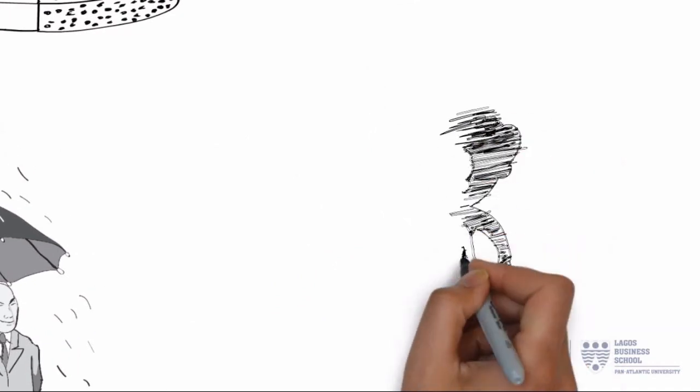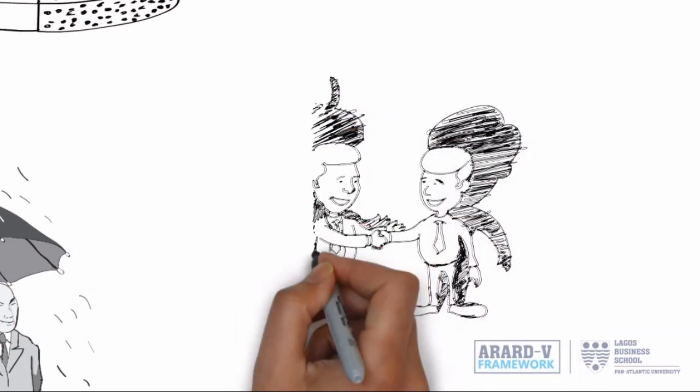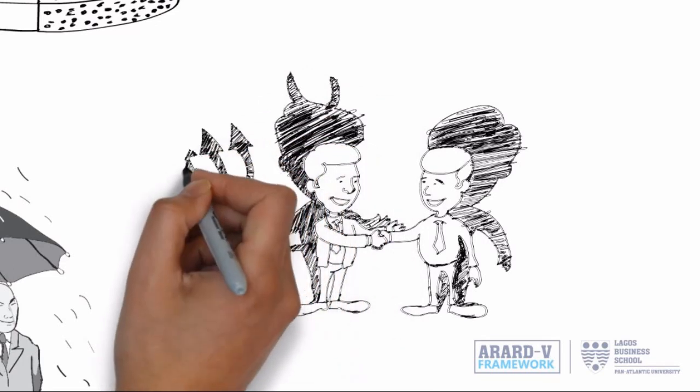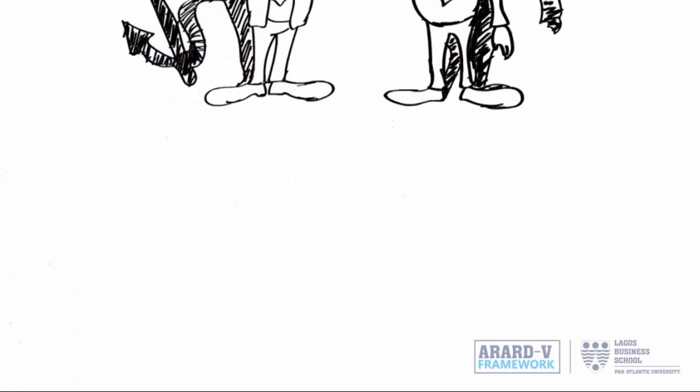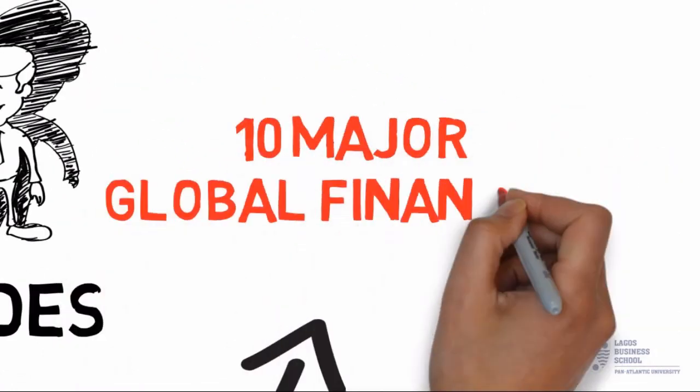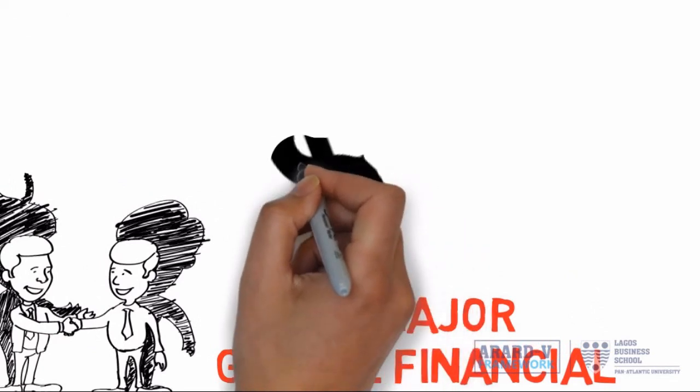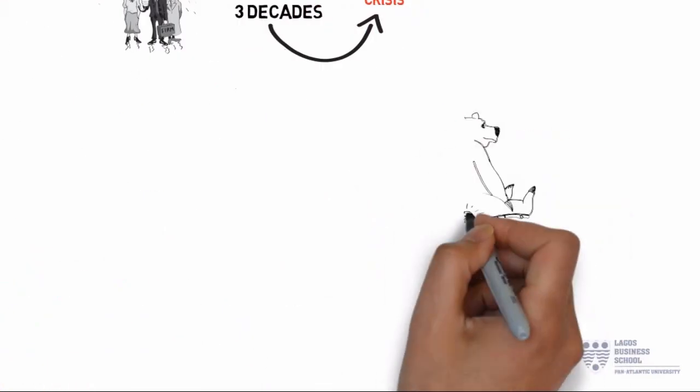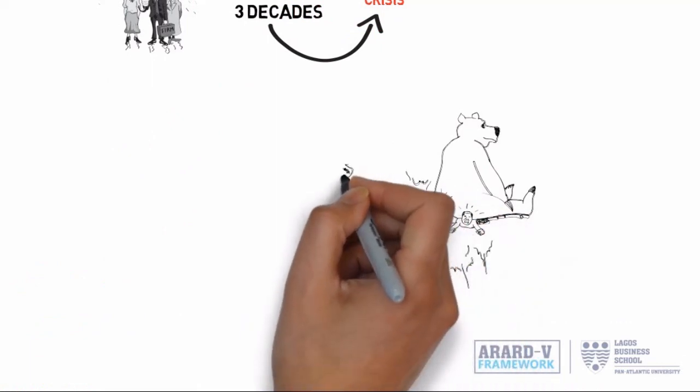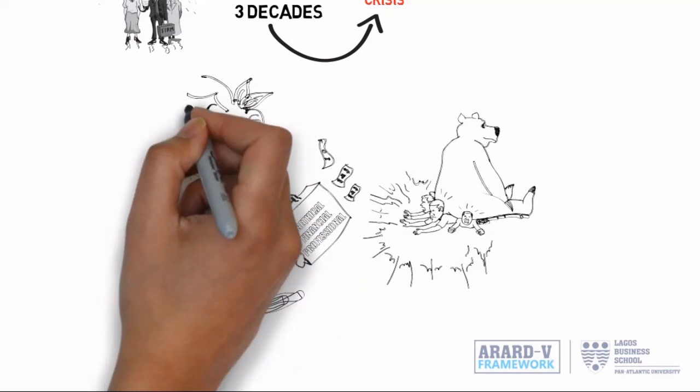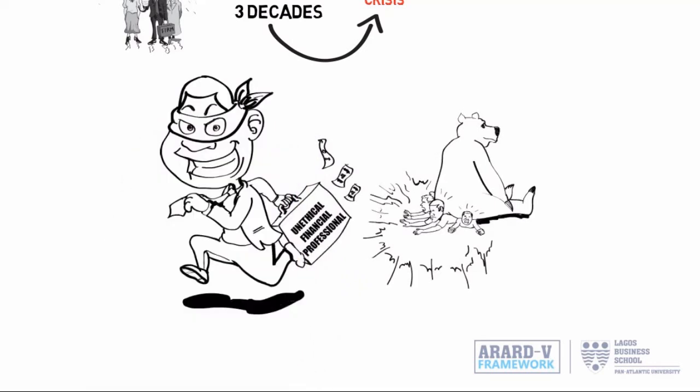Historical and recent corporate finance scandals demonstrate that some financial decision makers have been unethical in their decision-making process. In the past three decades, there have been ten major global financial crises with trillions of dollars lost. Usually, investors, households, and the economy lose out, but finance practitioners responsible for the crisis seem to escape legal or financial consequences.